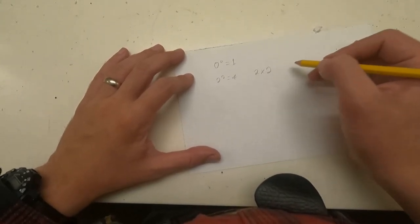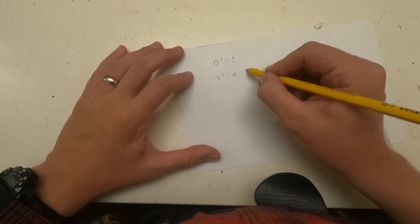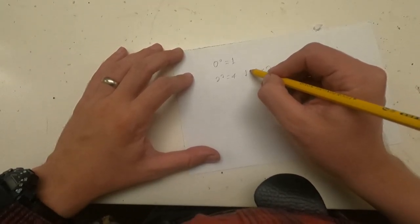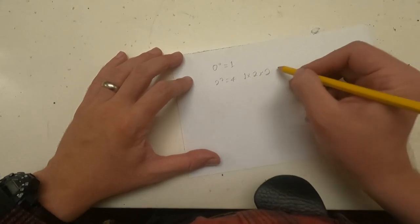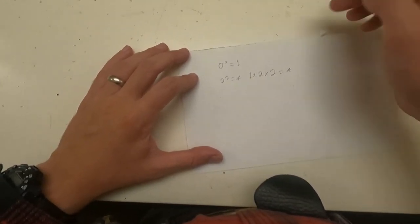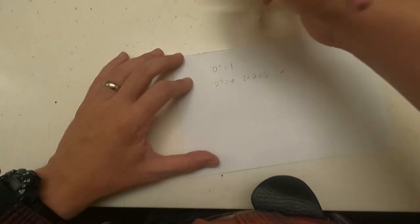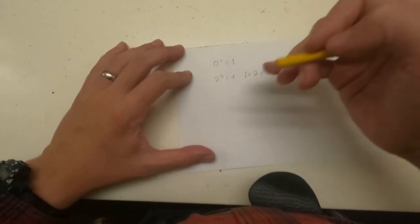But really, what you're actually looking at is 1 times 2 times 2 equals 4. Now, that 1 usually isn't necessary, but it's always technically there.